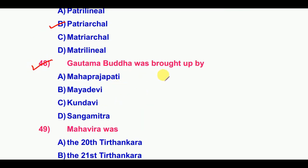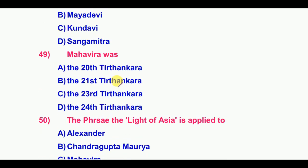Gautama Buddha was brought up by — the answer is option A: Maha Prajapati. Mahavira was the 24th Tirthankara.